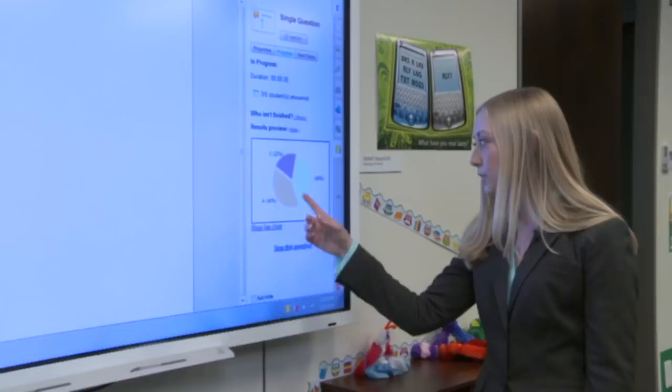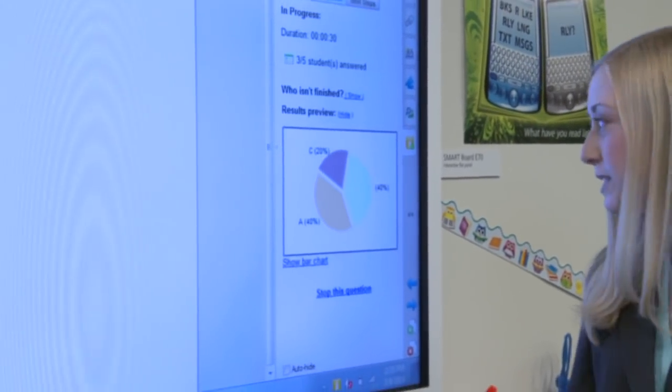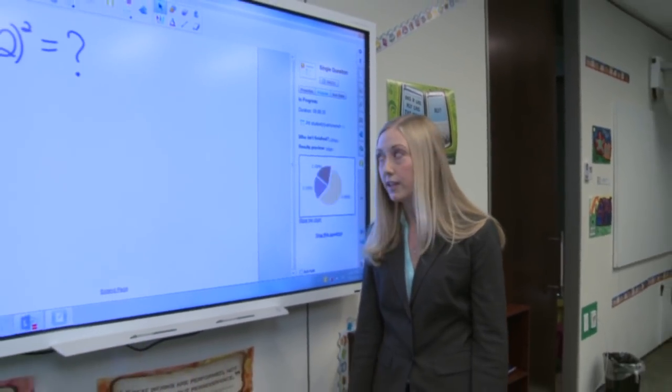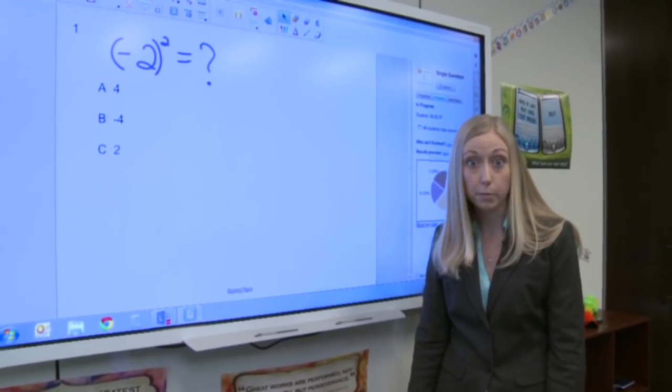We can see here that our students have responded, and the correct answer is actually A, and 40% of them have got it right. So as a teacher, I can see here that I need to review this concept with my students since only 40% of them got it correct.